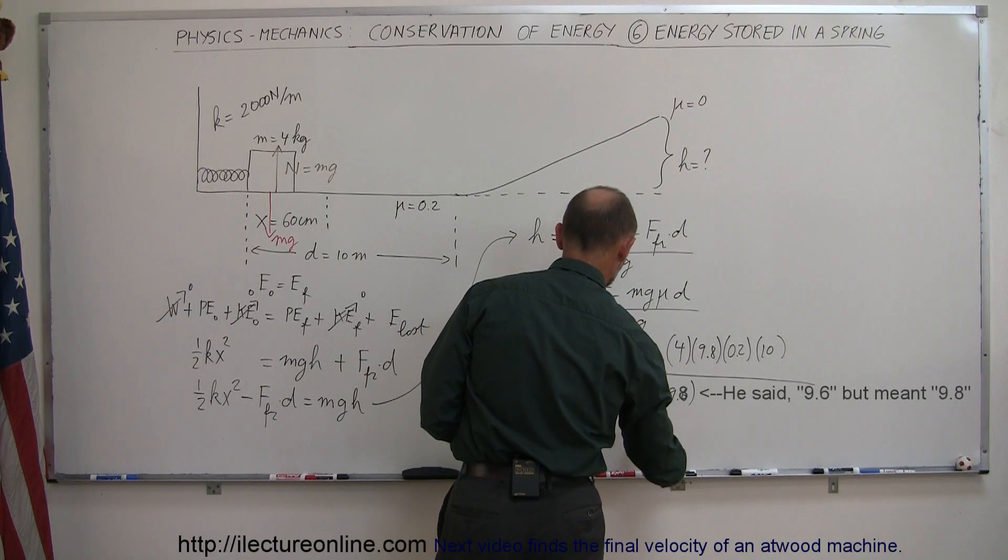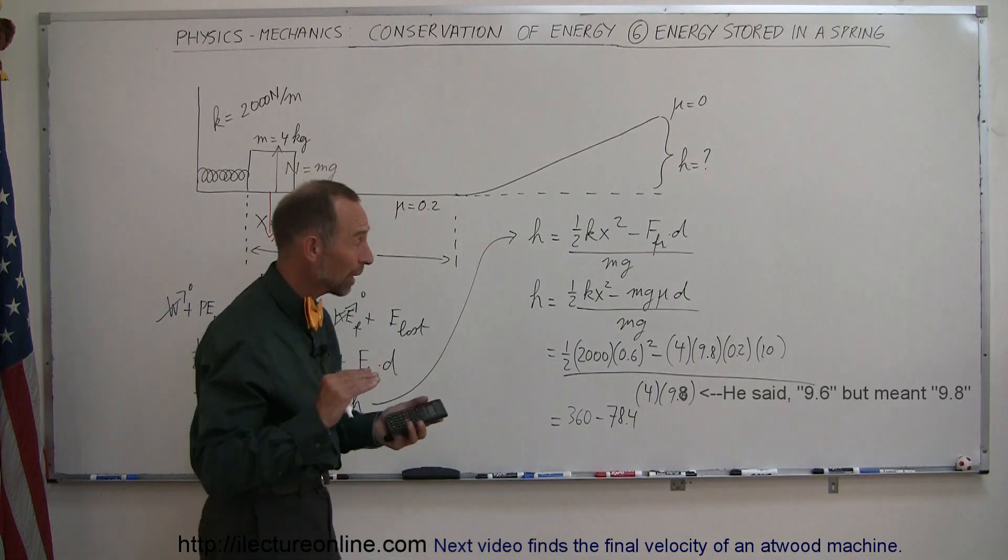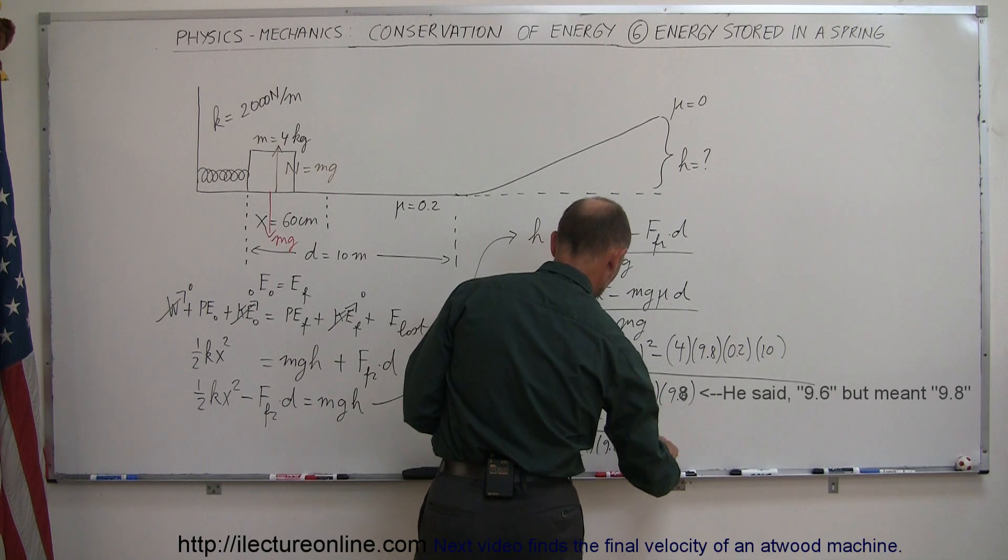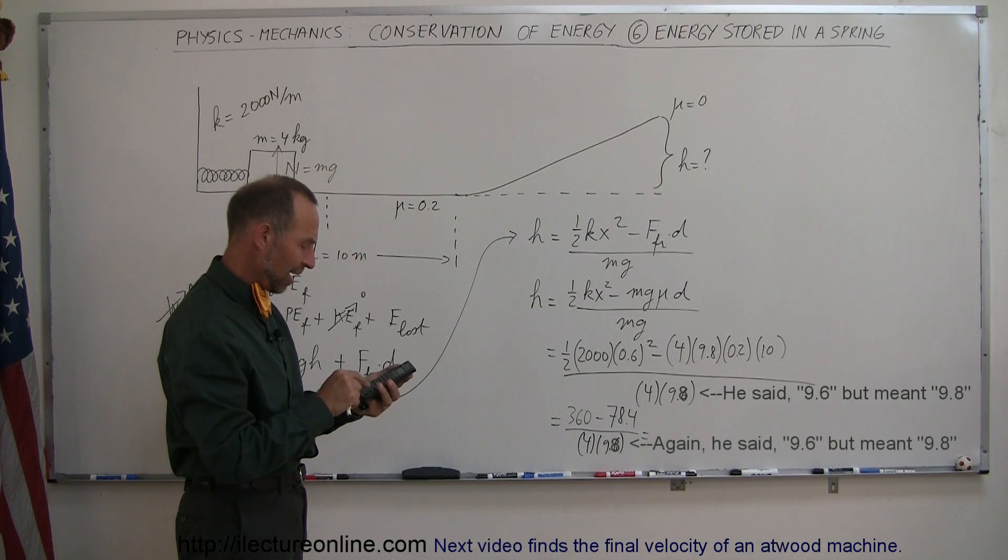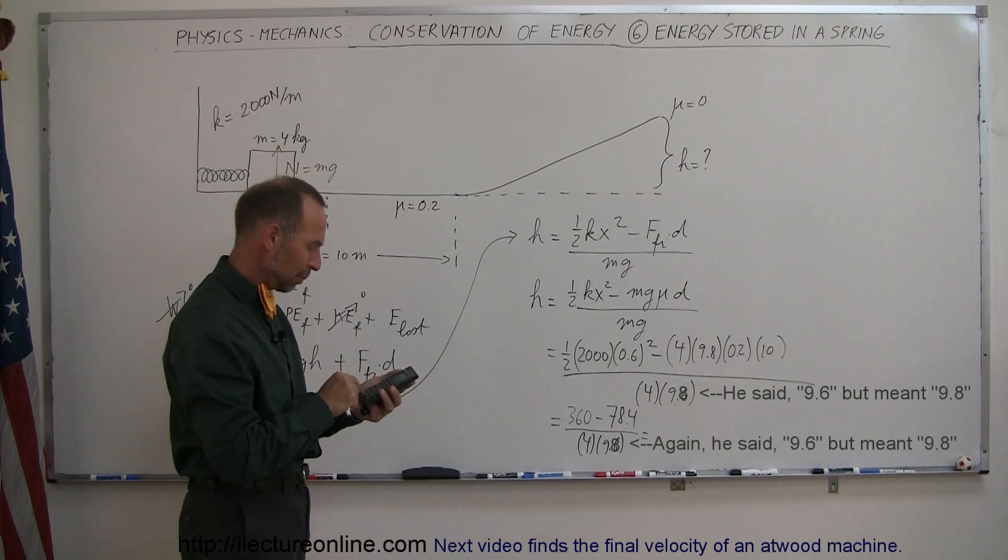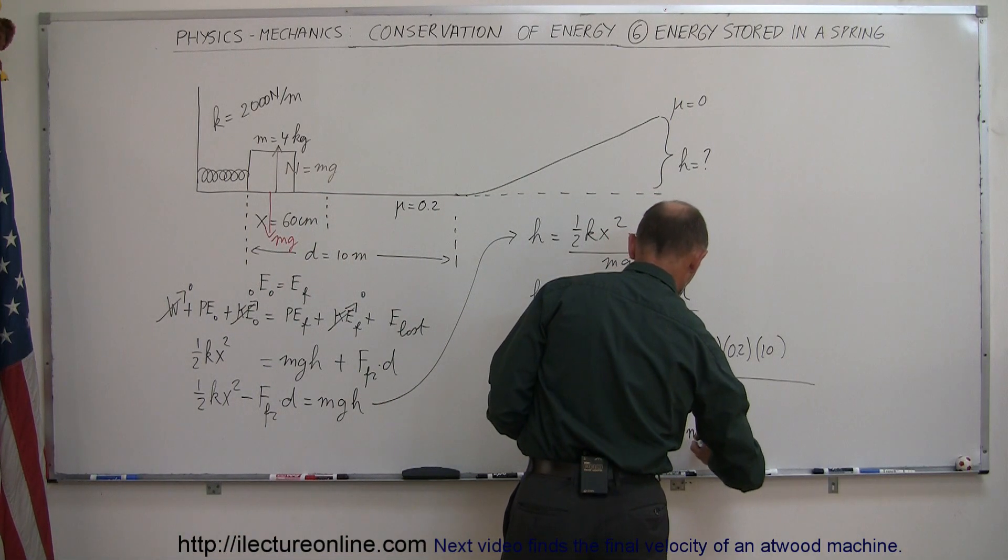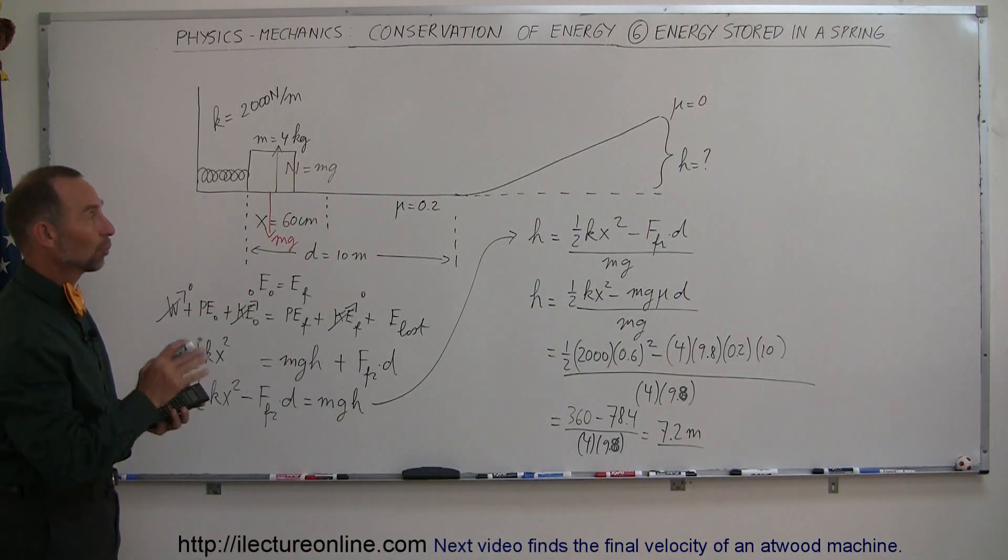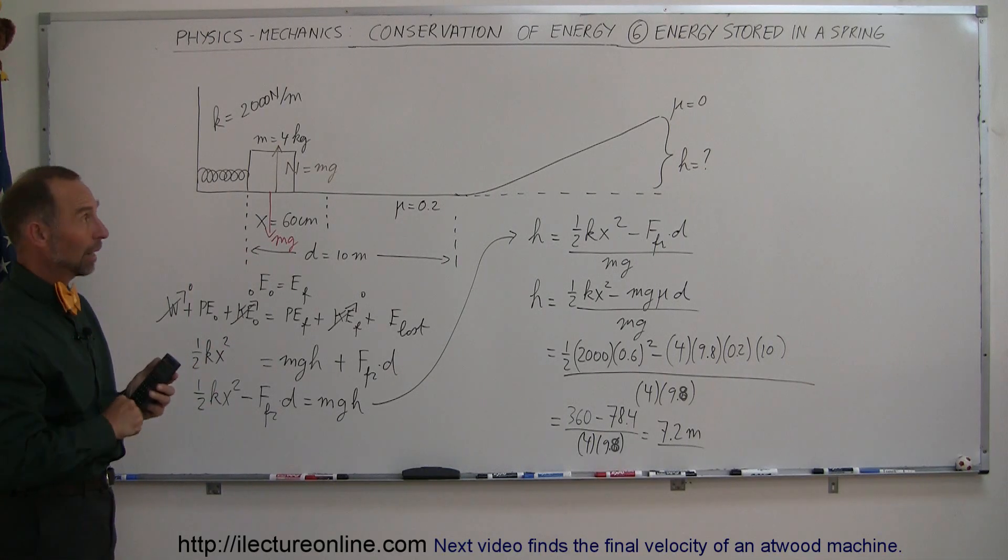So notice here that the amount of energy required to overcome friction is less than the amount of energy that was stored in the spring, so it will make it to the incline and go up some distance. And, of course, divide that by 4 times 9.8. So make that minus, subtract it from 360, and divide by 4 and divide by 9.8 equals, and it's 7.2 meters. And that will be the height gained by the object after it makes the incline. Of course, we weren't asked how far the incline, we simply asked how high did it go. And that's how you do a problem like that.